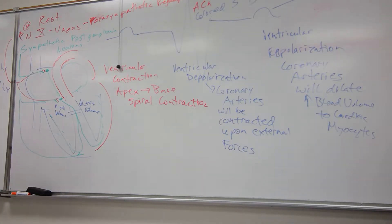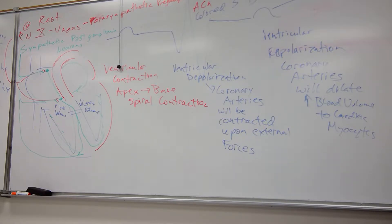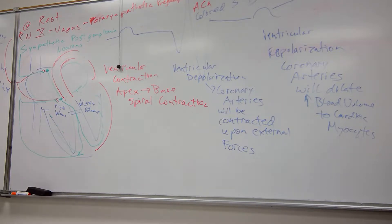DVT — deep vein thrombosis — can lead to a pulmonary embolism and ultimately death if the clot is large enough. A saddle embolism is so large it blocks a whole functional zone of the lung. So you've got concentric cardiac hypertrophy, dilated cardiomyopathy, and DVT as key conditions to understand.